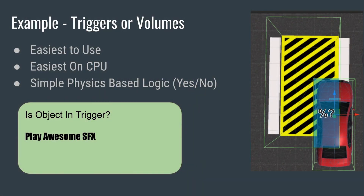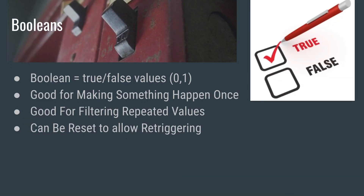Maybe you want a different way of doing things, and I want to show how we can accomplish that using a type of variable called a boolean. A boolean is basically a simple switch — yes or no, true or false, zero or one. It's binary. It's good for making something happen only one time, and also good for filtering repeated values so you don't send the same value over and over again.